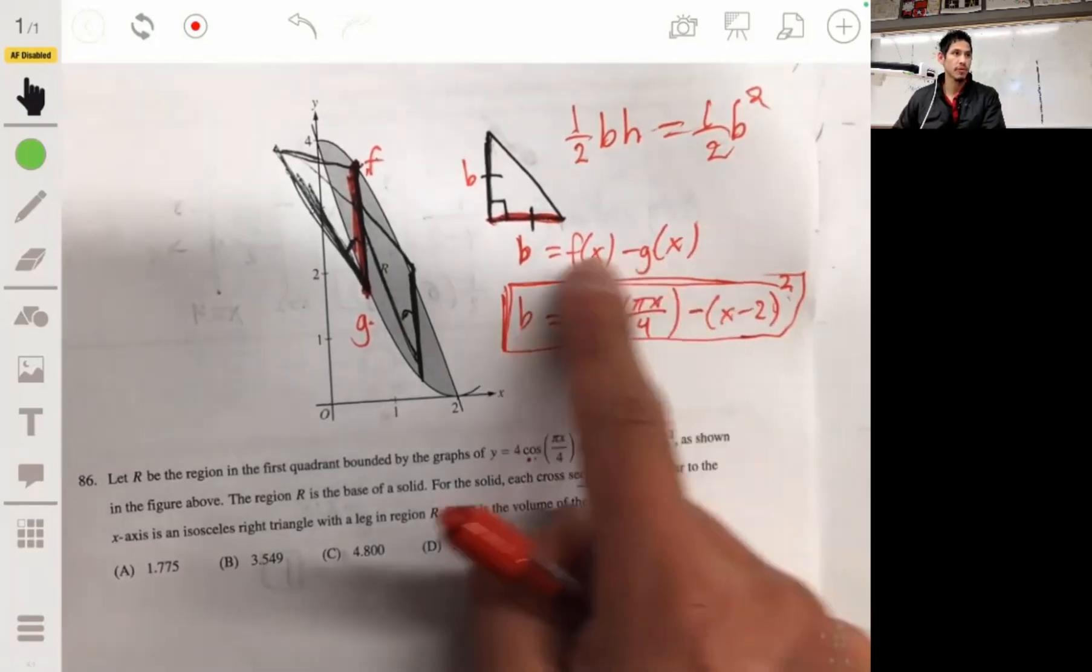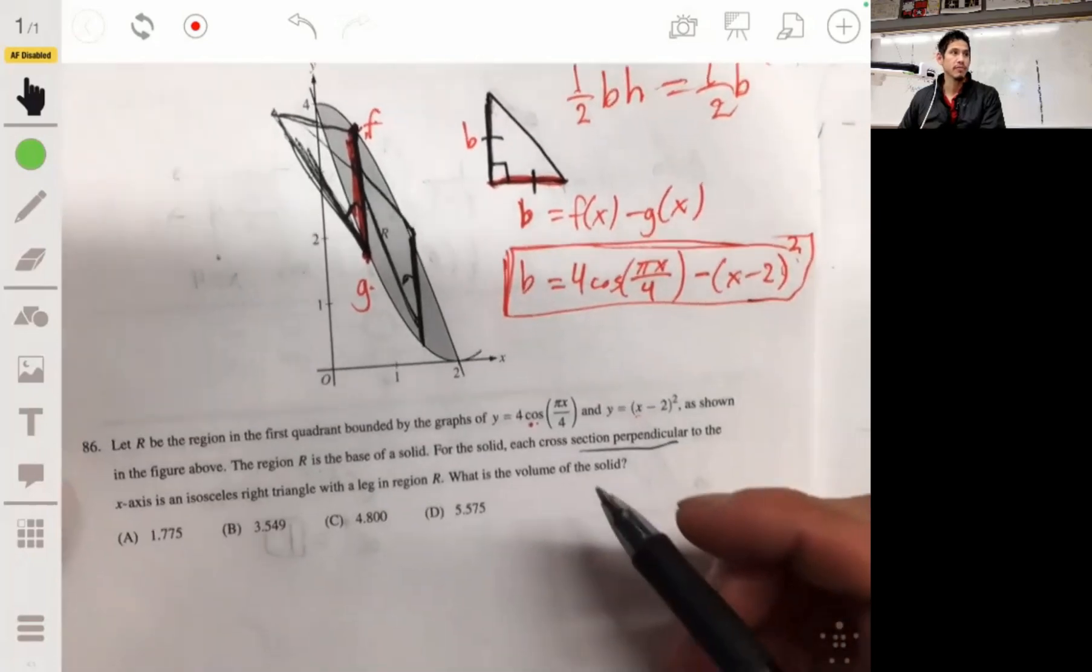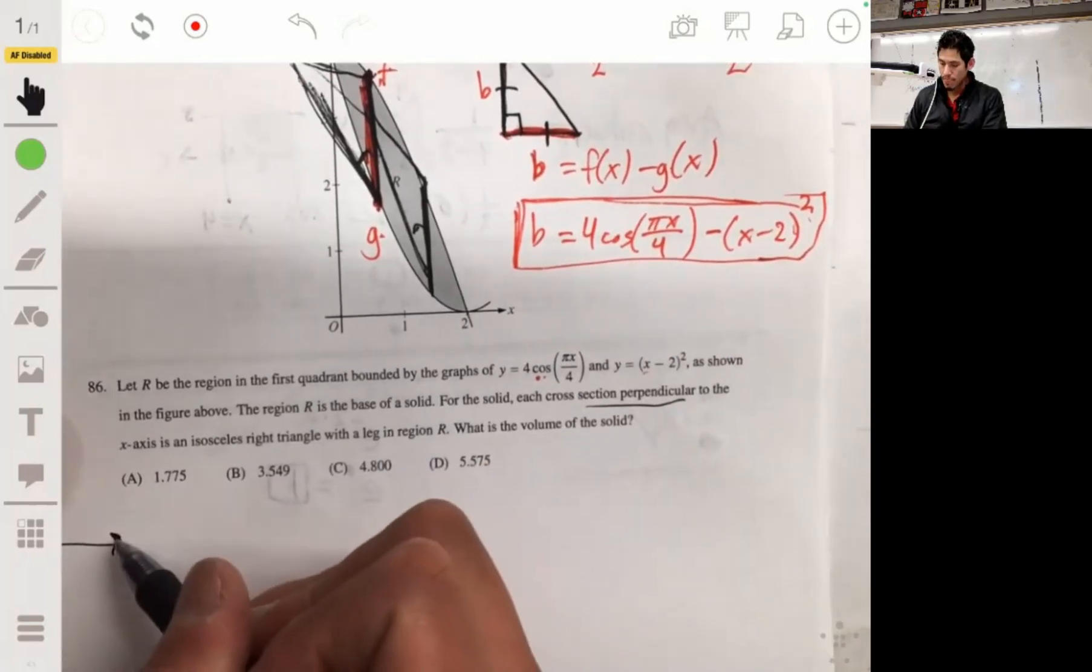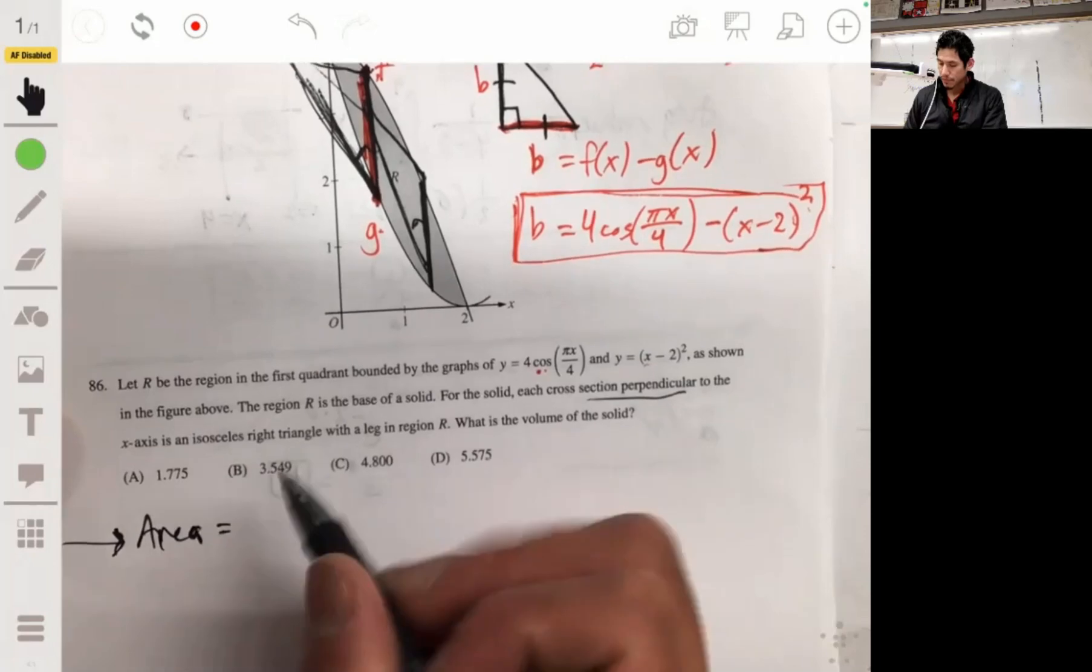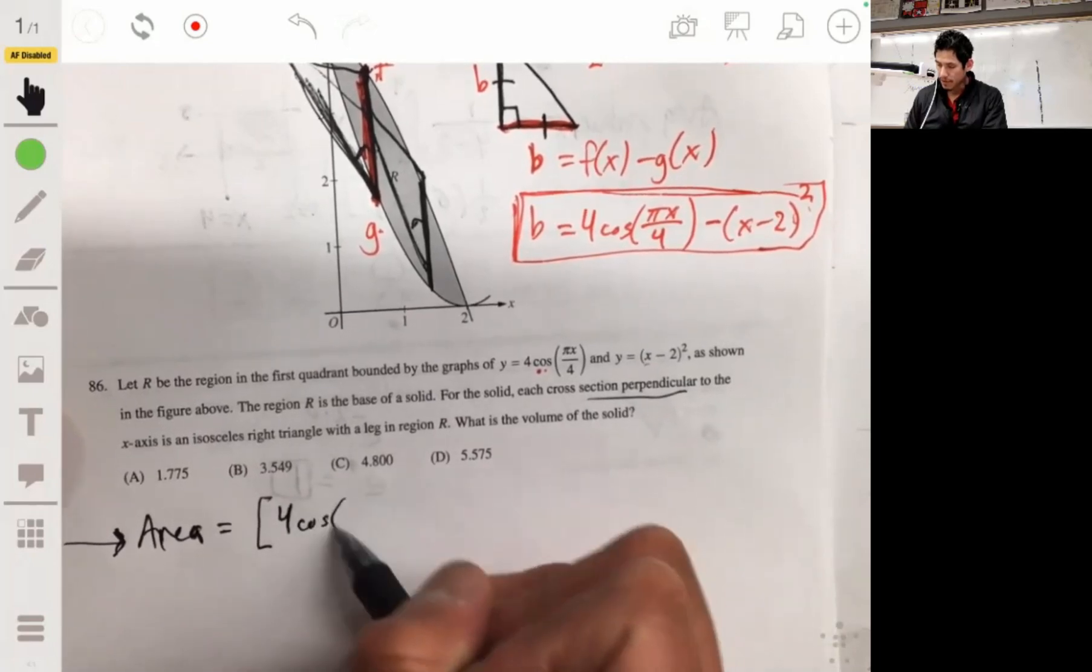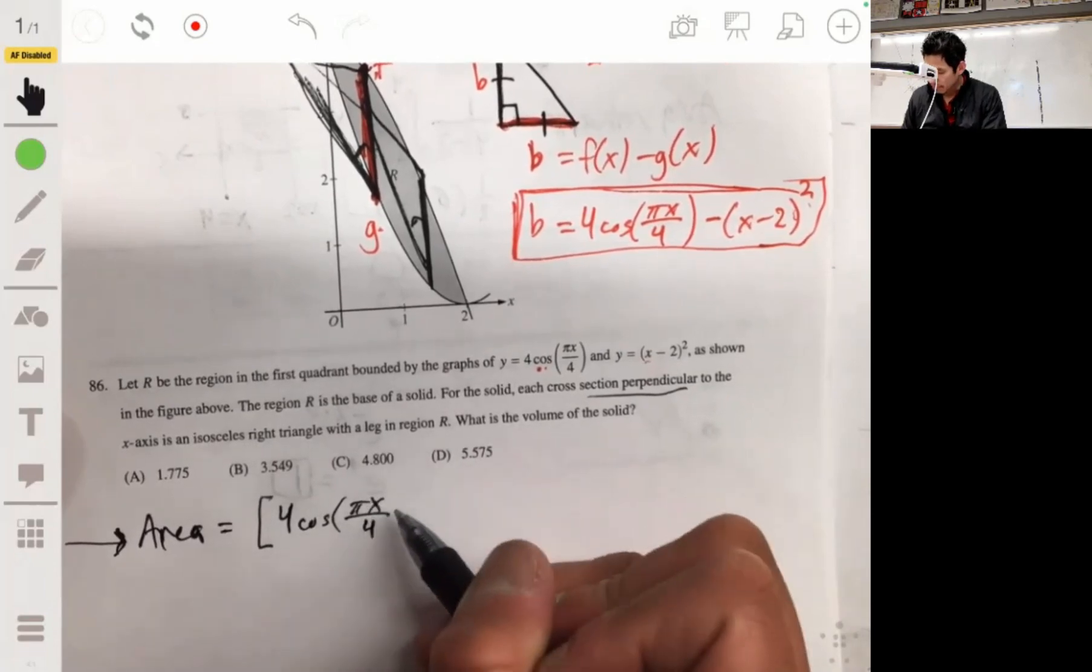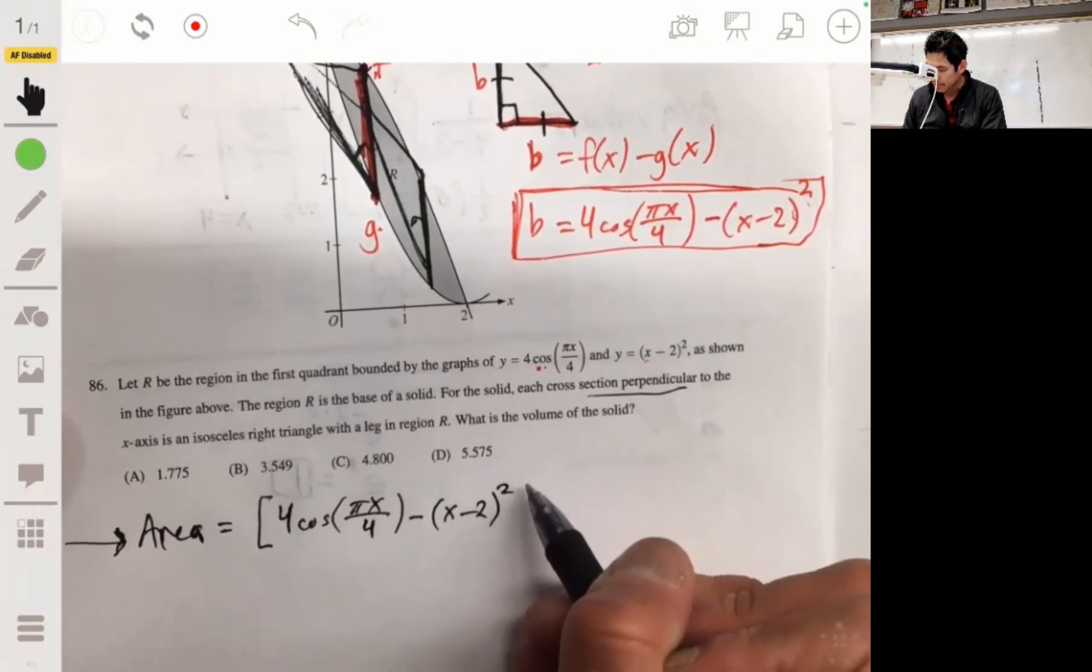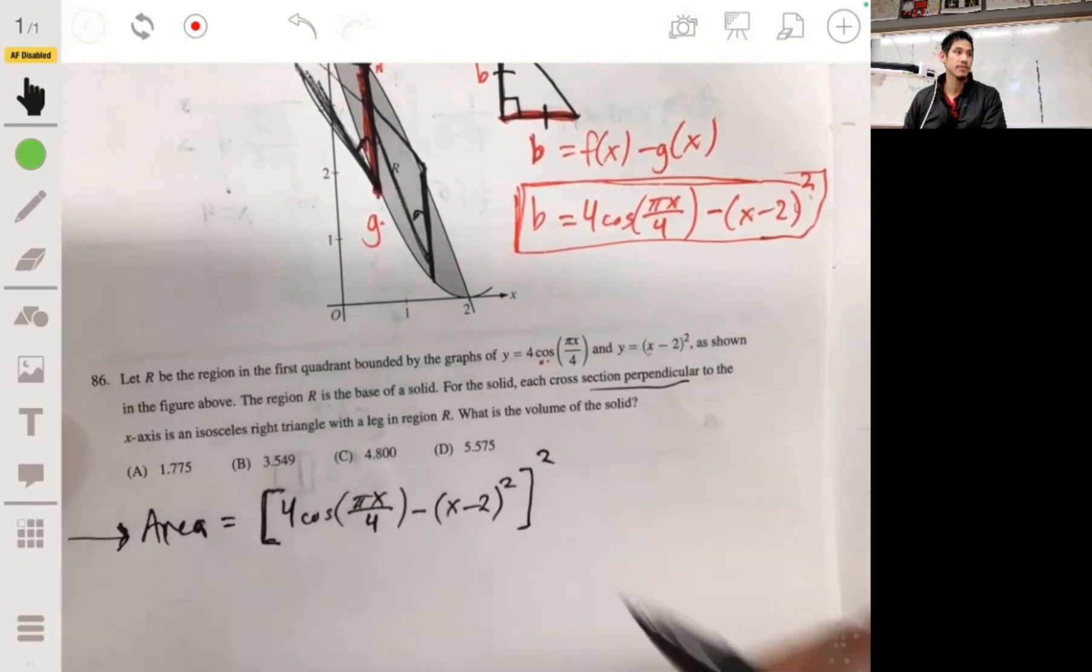And then the area would be this whole thing squared. The area of each of those cross sections will be 4 cosine of pi x over 4 minus (x minus 2) squared, this whole quantity squared.